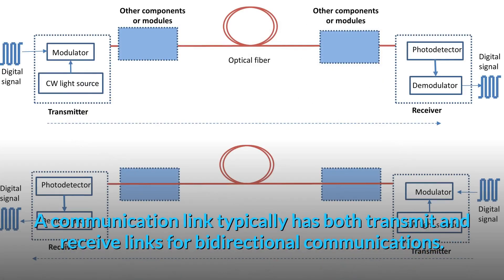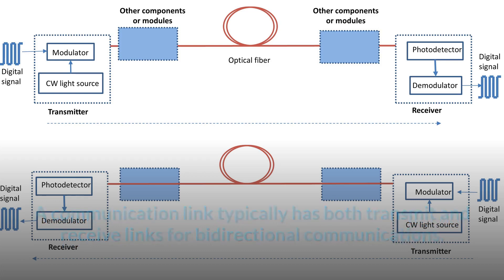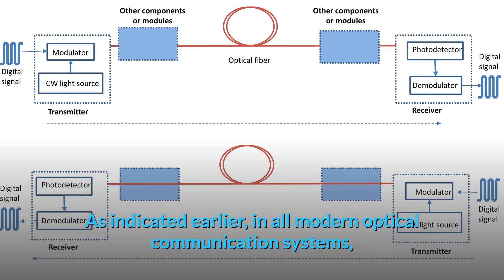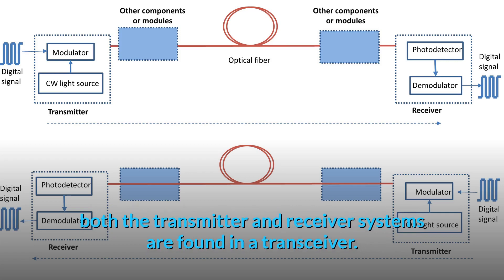A communication link typically has both transmit and receive links for bi-directional communications. As indicated earlier, in all modern optical communication systems, both the transmitter and receiver systems are found in a transceiver.